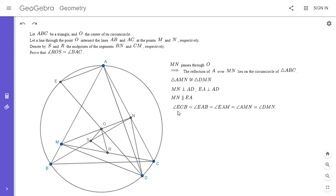We have angle ECB equals angle EAB, which equals angle EAM. And angle EAM equals angle AMN. That's where we use the fact that MN is parallel to EA.